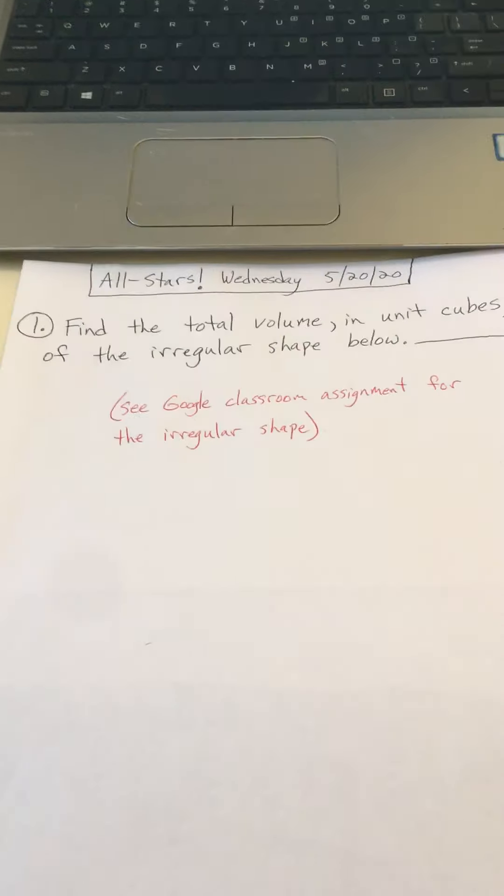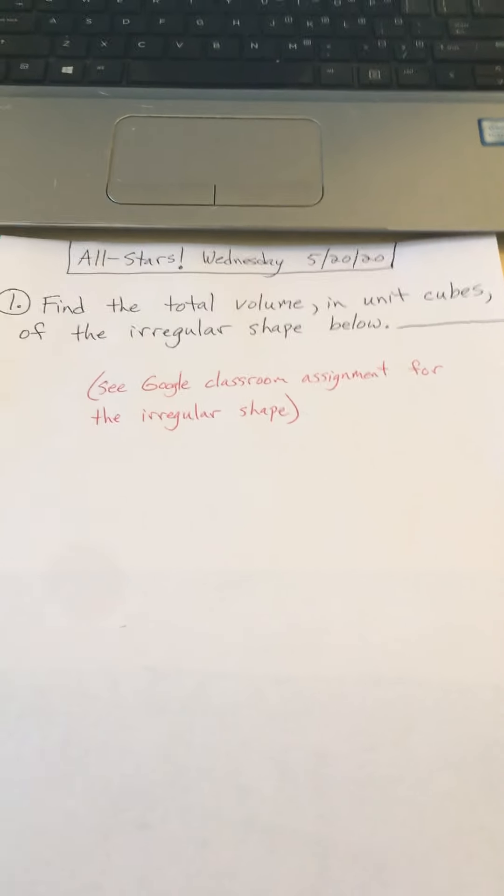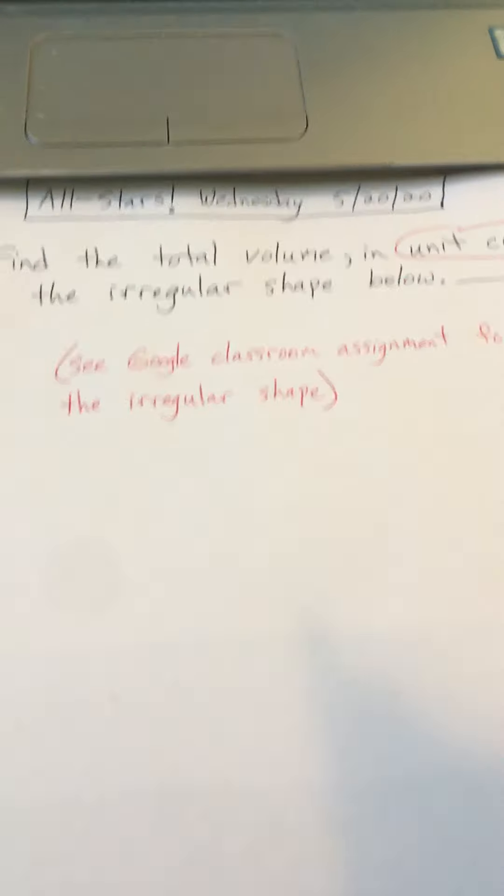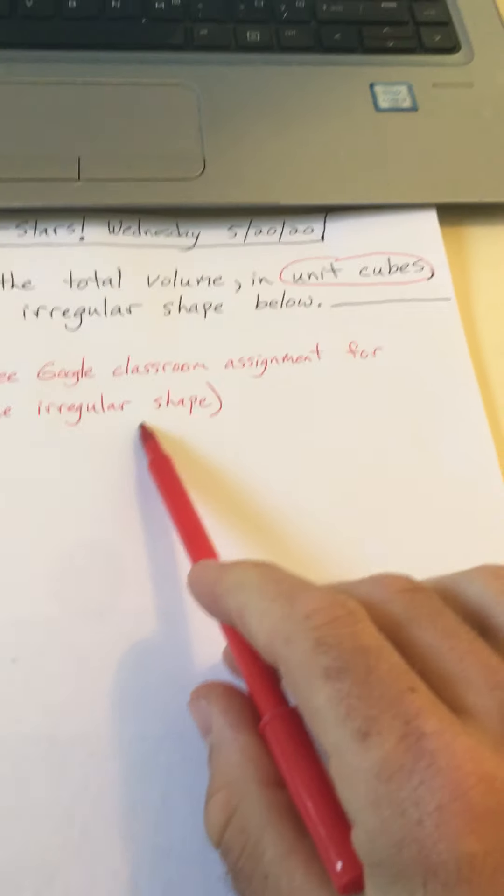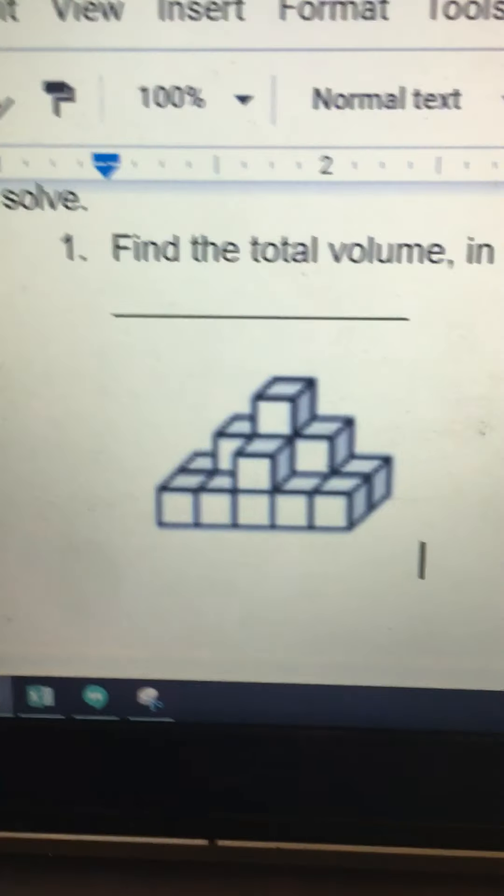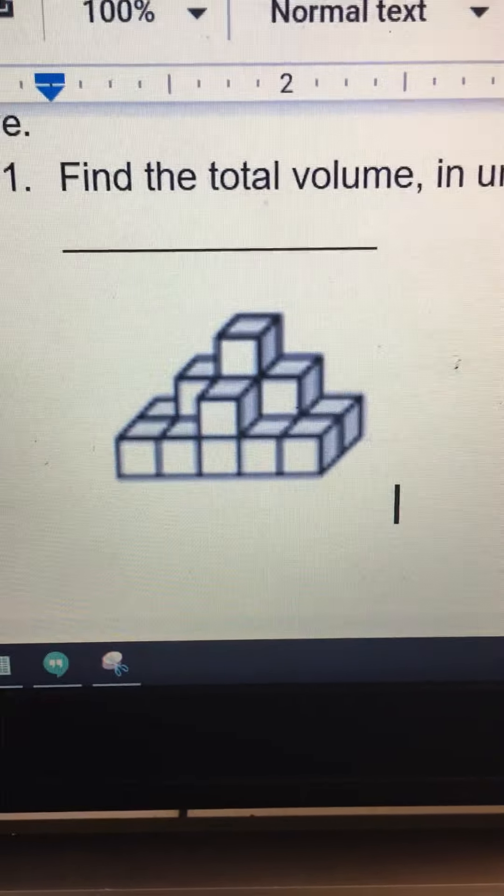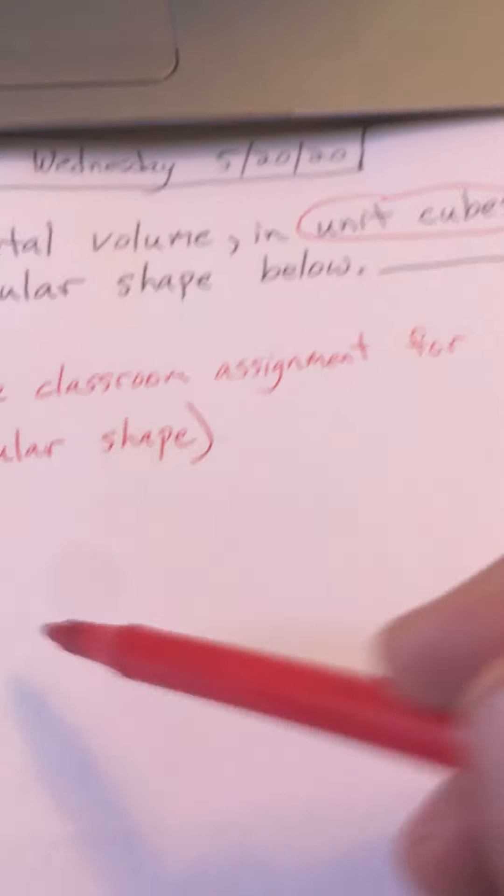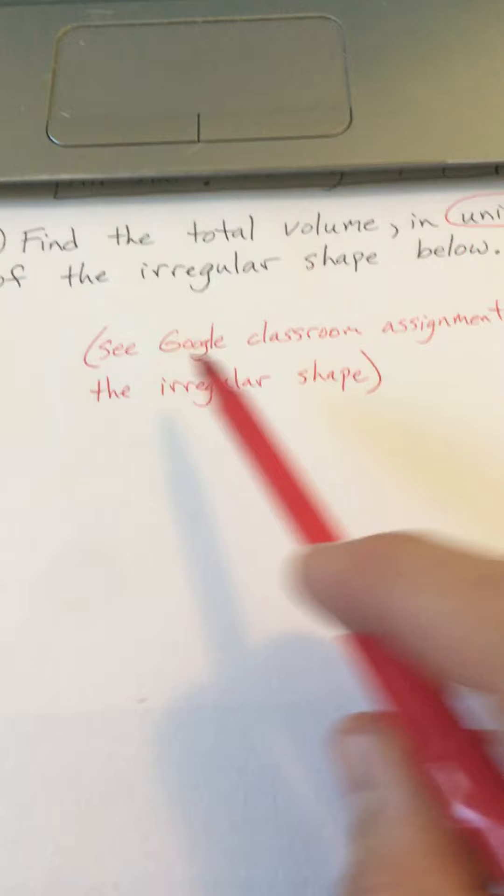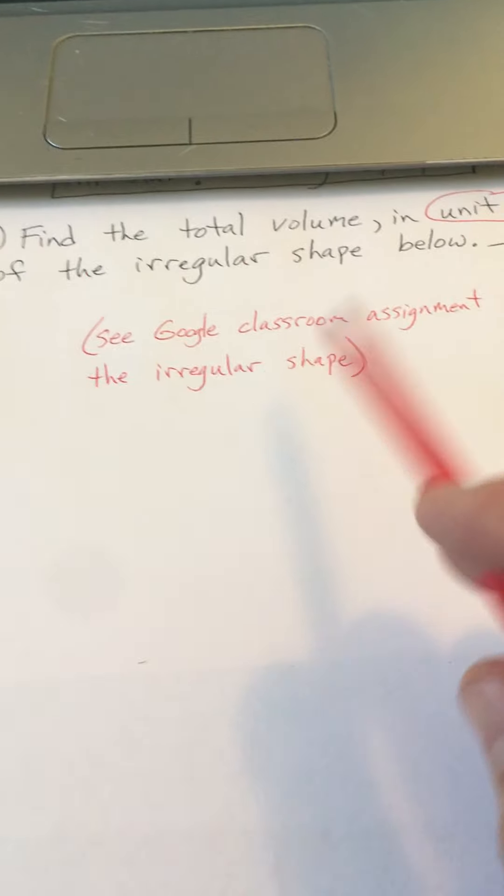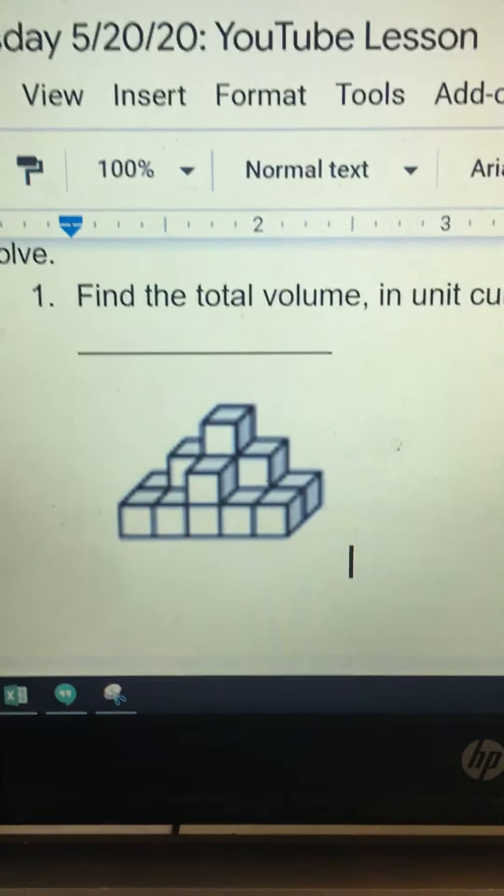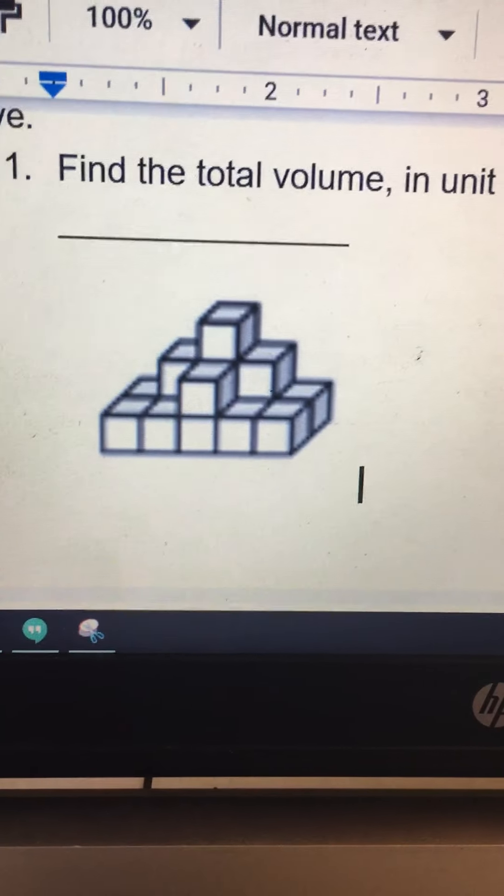It says find the total volume in unit cubes of the irregular shape below. So I tried five times to draw this shape and I couldn't get it right, so I'm just going to use my computer screen. That's the shape that you should see. I literally drew it and it's really hard to draw those cubes, so I couldn't do it. So it says see the Google Classroom assignment for the irregular shape. This is it right here. Pause this if you need a second to find it.